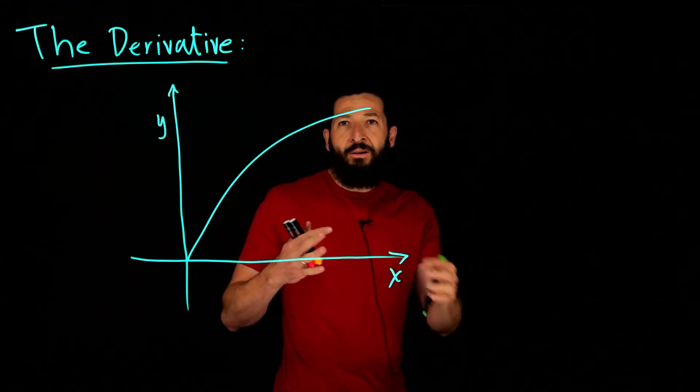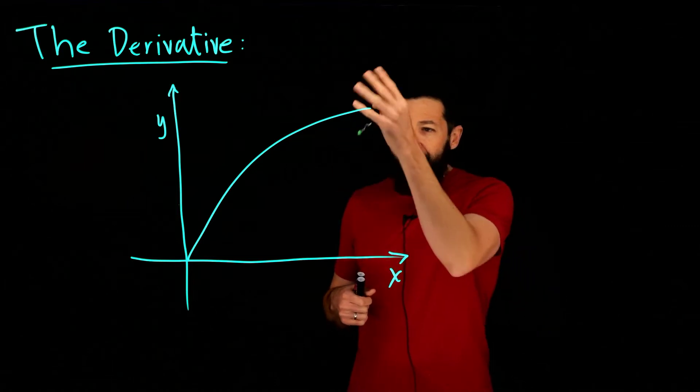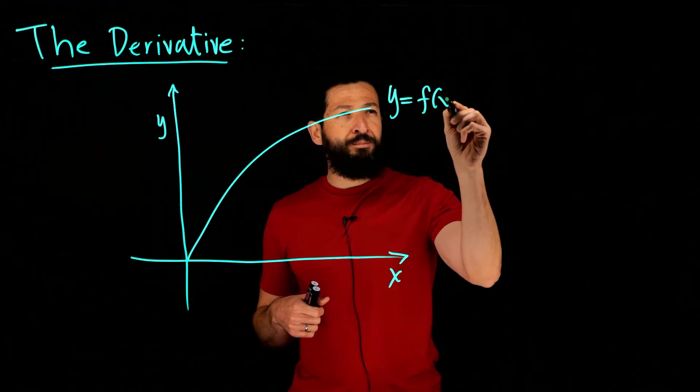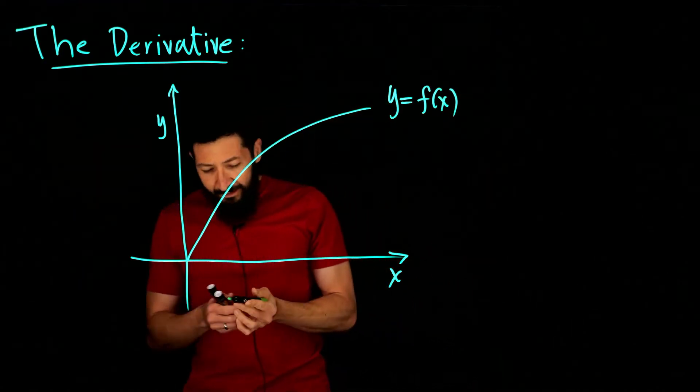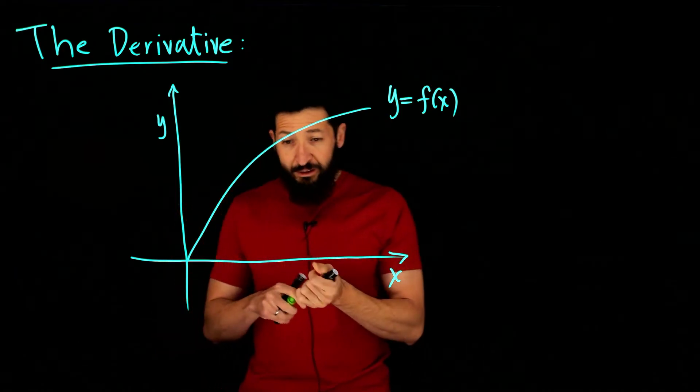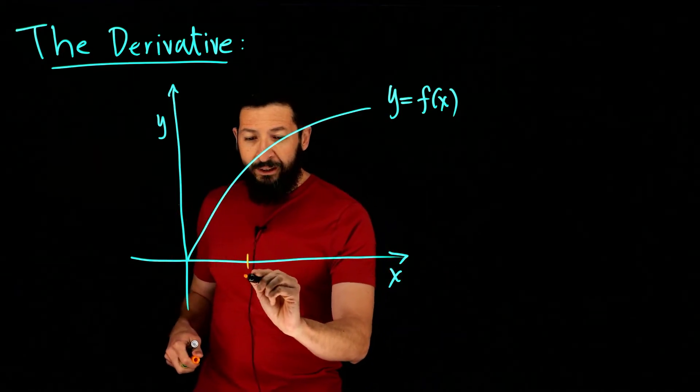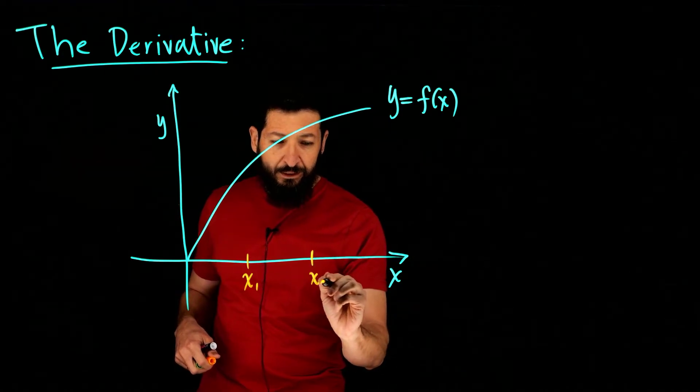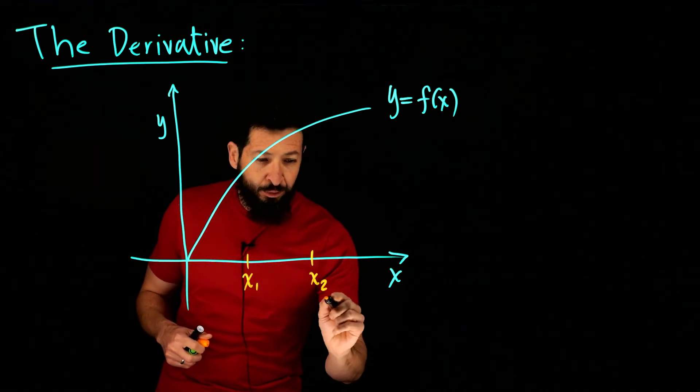Let's say x and y right now, so y is a function of x. Say y is f of x. Let's say we have two points of interest in our function. We have an x1 here and an x2 here, and this x2 is going to be equal to x1 plus some quantity h.